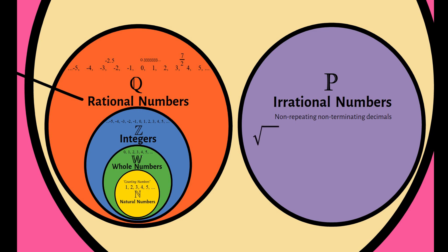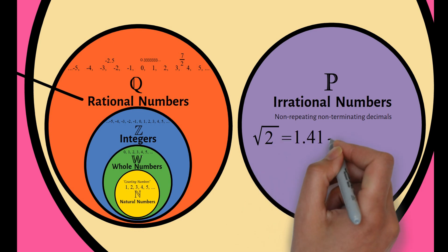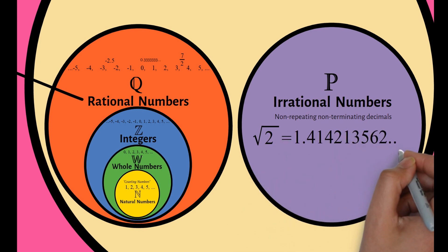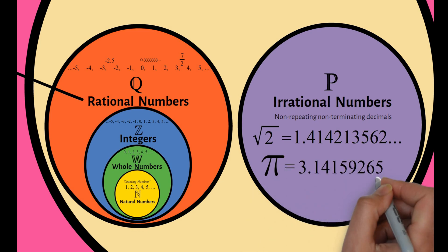Example: square root of 2. It is equal to 1.414213562 and so on. Kung mapapansin nyo, infinite yung decimals pero walang pattern sa digits ang umuulit. In this case, di natin ito mako-convert into fraction. Another example is pi. It is equal to 3.14159265 and so on. It is non-repeating, non-terminating decimals.